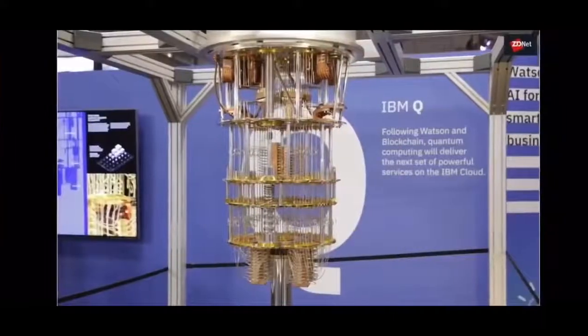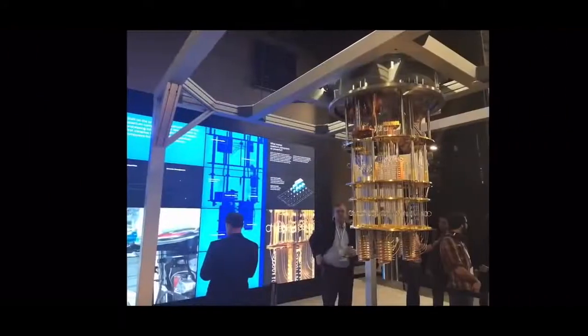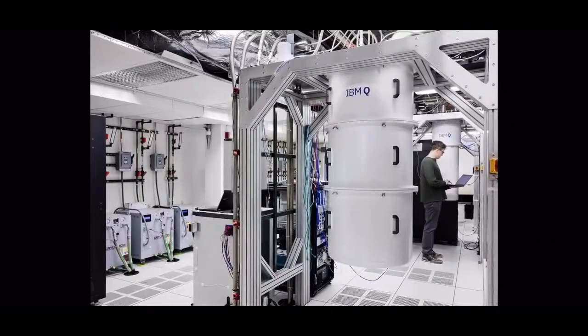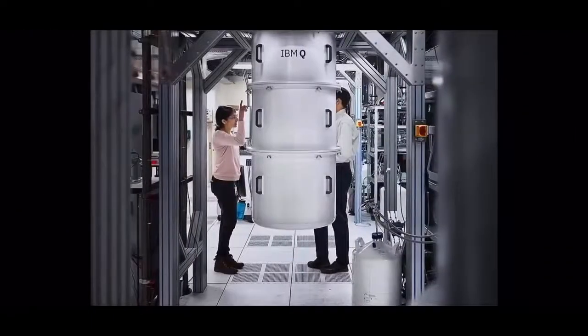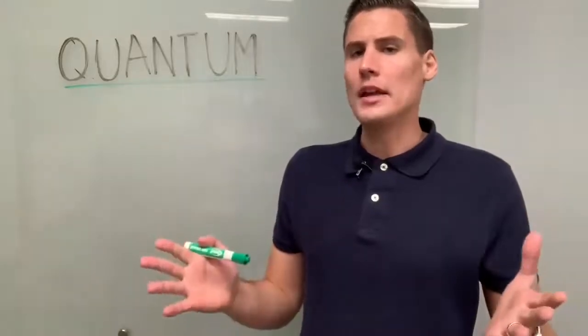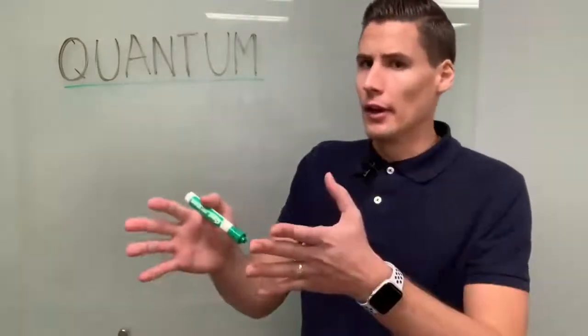Some people call it an alien computer because it only works in conditions resembling outer space, meaning freezing and airless. These oil drum barrel-looking things that they go inside are a cryogenic vacuum freezer that sucks out all the air pressure and cools the quantum computer down to around 460 degrees below zero with the temperature it needs to be able to operate. So what does that mean in practicality in real life? How does that affect how we work with computing?